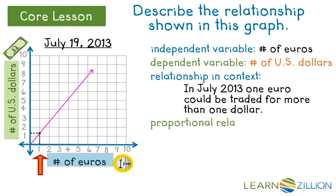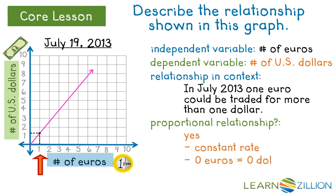Is this a proportional relationship? Will the relationship between the dollars and the euros stay constant? Yes it is. How do we know this? Because there's a constant rate, a straight line, and 0 euros equals 0 dollars — the line begins at the origin.